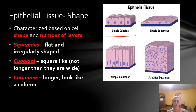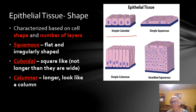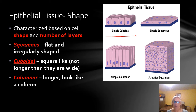The last shape is going to be columnar, and these are going to be more like a rectangle — longer and more like a column. Sometimes these can be kind of intermediate between cuboidal and columnar, so it's important to find a way to tell the difference between the two.